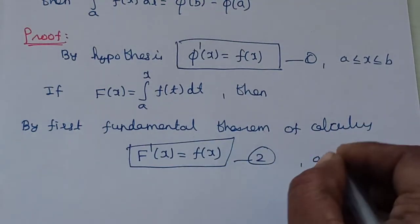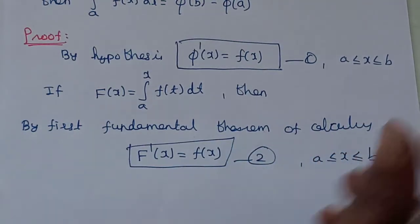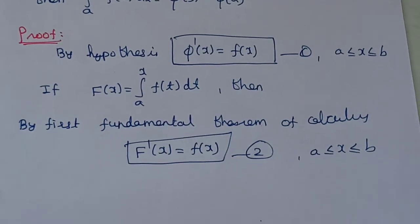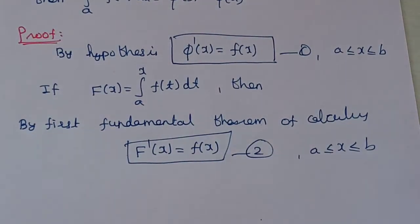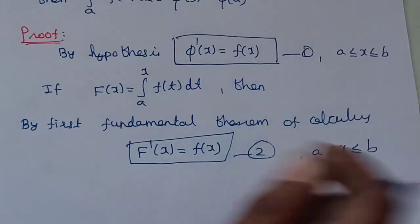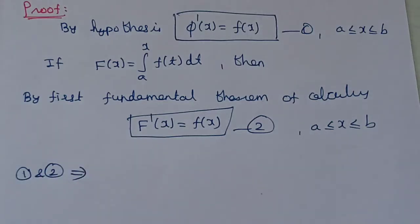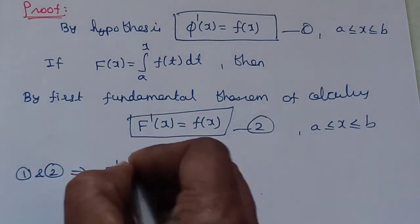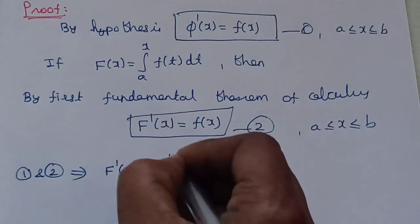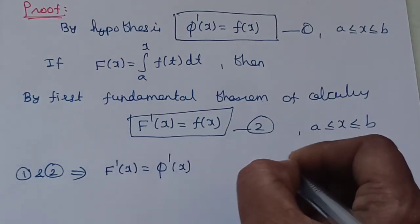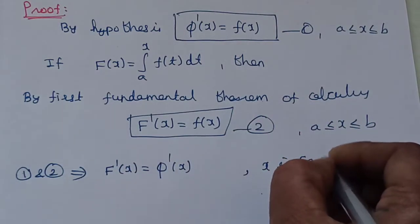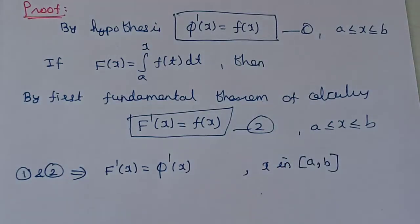Here a is less than or equal to x less than or equal to b. Now, from equations 1 and 2, by hypothesis phi-dash of x equals f of x, and by the First Fundamental Theorem F-dash of x equals f of x. Therefore, capital F-dash of x equals phi-dash of x, for x in the closed interval [a, b].